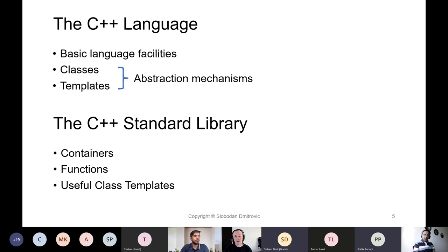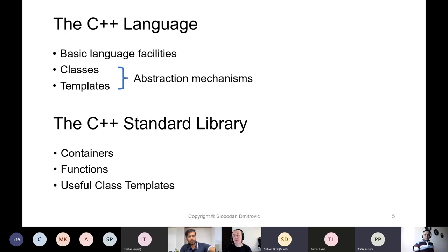The C++ language is a highly capable language that is very, very good at handling both the performance side of things and the complexity side of things. By definition, we are covering a lot of ground with this programming language. We will get to that in greater detail in later slides. Let's look at the C++ standard library.